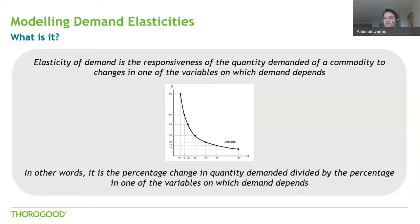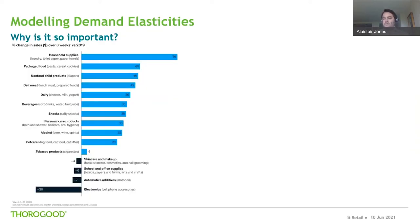Price is often the variable in question, but other variables can impact demand, and we'll highlight that during today's session. In essence, we're trying to determine the percentage change in quantity demanded by every percentage change in one of the variables. So why is it so important, especially today? On your screen right now is a chart based on Nielsen data showing the percentage change in sales between the same three-week period in March 2020 versus March 2019 for certain goods. There's a massive spike in demand for household supplies, but many other categories saw an uptick too, like alcohol and personal care products. Conversely, consumer electronics saw a steep drop in demand.